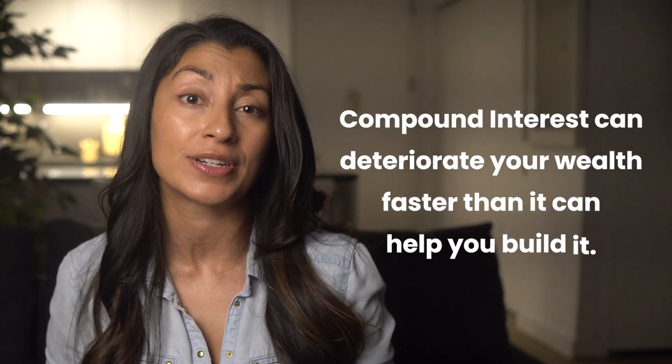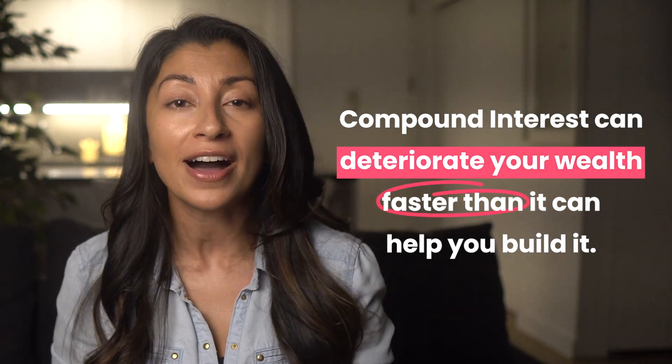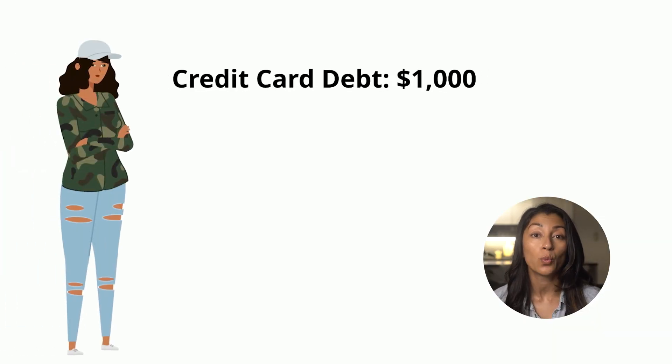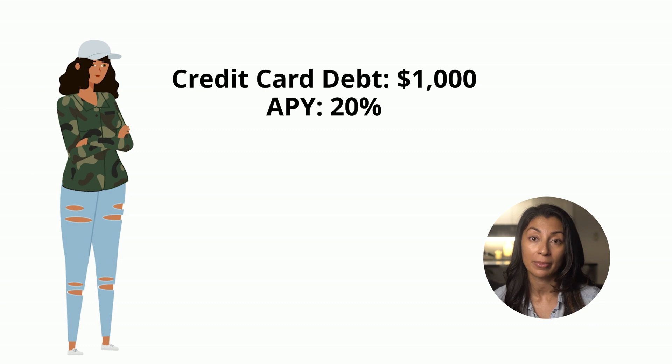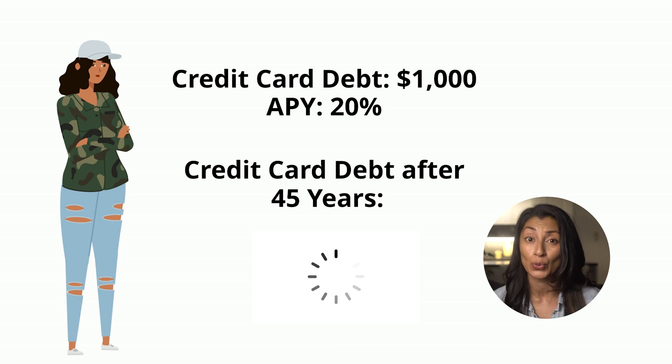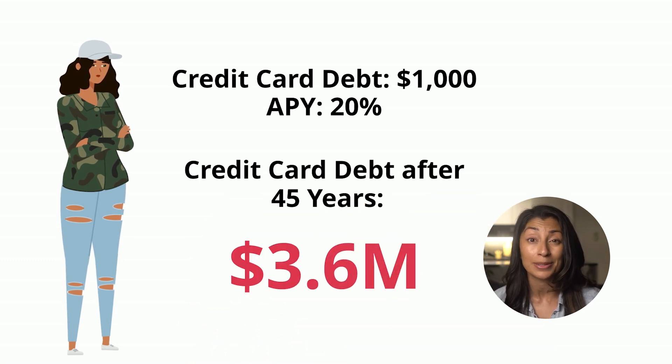Now here's the flip side. When it comes to debts, compound interest can truly become your worst enemy. It has the power to make your debt snowball exponentially, leaving you in a seriously tough financial situation. It's worth noting that most high-interest debt accrues interest at rates astronomically higher than what you can earn through investments, meaning compound interest can deteriorate your wealth faster than it can help you build it. Let's say Sabrina has $1,000 in credit card debt costing her 20% APY. Ignoring fees and minimum payments, if Sabrina carries this debt, after 45 years this would grow to — wait for it — $3.6 million.